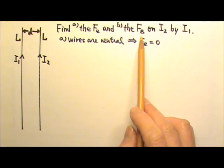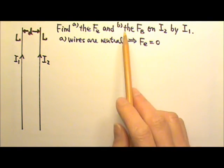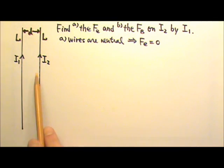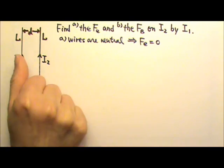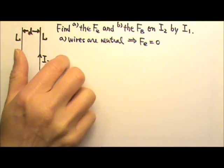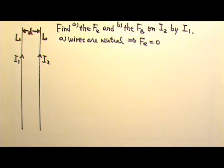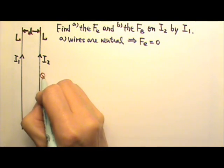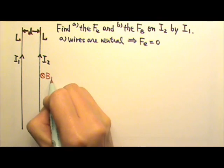However, the magnetic force is not zero. For part B, we can use I1 to produce a magnetic field over here, and then place I2 in that magnetic field, so there is a magnetic force acting on I2. I can use my thumb to follow I1, and on the right side of I1, my four fingers go into the page. So the magnetic field produced by I1 over here goes into the page.